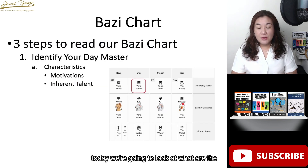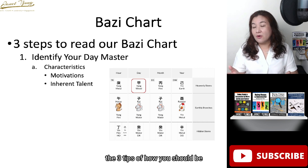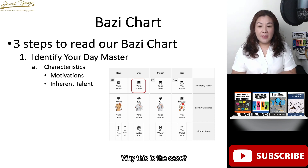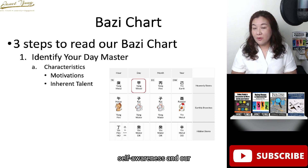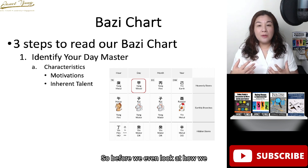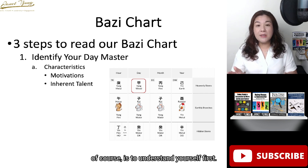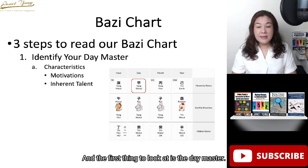Today we are going to look at the three steps to read your Ba Zi chart. The first step would be to identify your day master. When we're looking at our Ba Zi chart, it's really what we call self-awareness and our perception of the world. So before we even look at how we perceive the world, the most important thing is to understand yourself first.